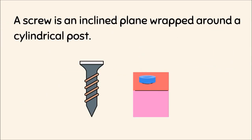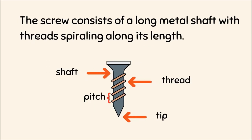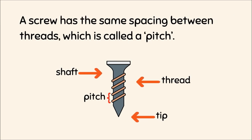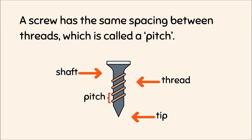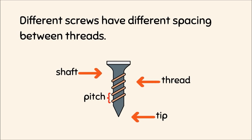A screw is an inclined plane wrapped around a cylindrical post. It is used to hold objects together or to lift objects. The screw consists of a long metal shaft with threads spiraling along its length. A screw has the same spacing between threads, which is called a pitch. Different screws have different spacing between threads.